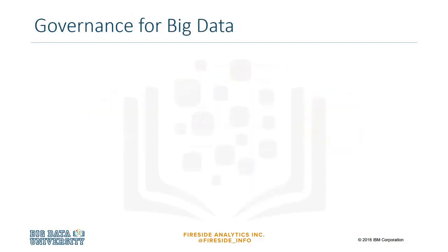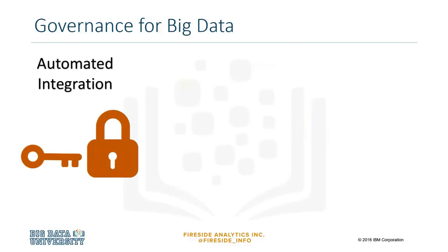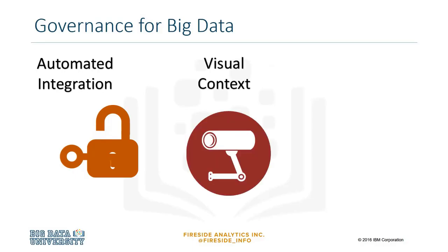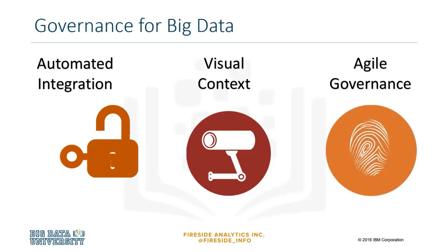Big data governance requires three things. First, automated integration — that is, easy access to the data wherever it resides. Second, visual content — that is, easy categorization, indexing, and discovery within big data to optimize its usage. Third, agile governance, which is the definition and execution of governance appropriate to the value of the data and its intended use.